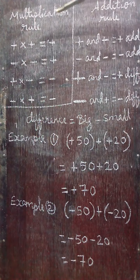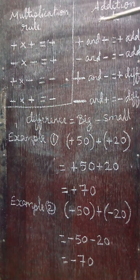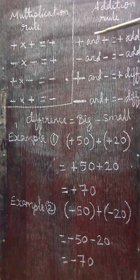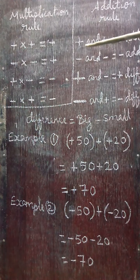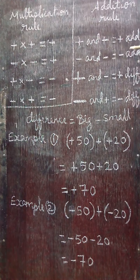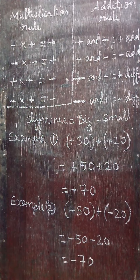This is the multiplication rule, and this is the addition rule. Once you open the bracket, you use the addition rule. Plus and plus — add the values. I will explain using the given examples.